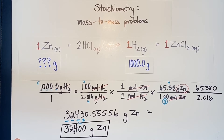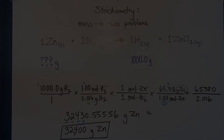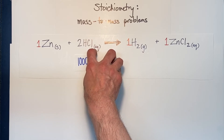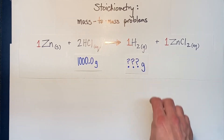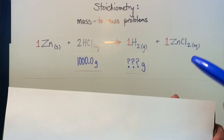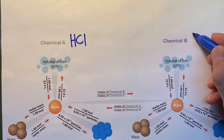That is problem number three in this week's homework assignment. If this makes sense and you feel confident, you're welcome to stop the video here. For those staying, I'll do one more practice problem. We'll keep the same equation — zinc plus hydrochloric acid yields hydrogen gas plus zinc chloride — but this time we start with 1000.0 grams of hydrochloric acid and solve for how many grams of hydrogen gas are produced. In this example, chemical A is hydrochloric acid and chemical B is hydrogen gas.